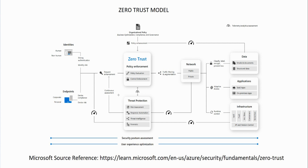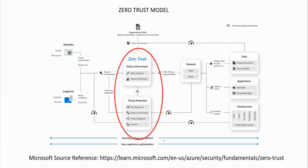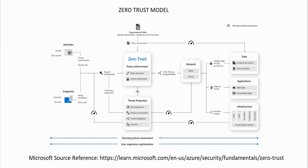A user might be seen as a threat if they're logging on during a time of day they normally don't log on, using an IP address they normally don't use, or from a different location — instead of logging on in New York, they're logging on from China. Those are all things that can be seen as a threat. With these different policies in place, I can decide whether or not you're getting in. This is all automated, so I can put all these policies in place ahead of time and determine whether a person is going to get in based on that.